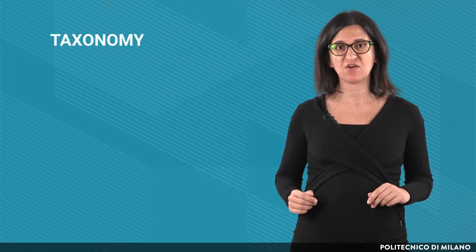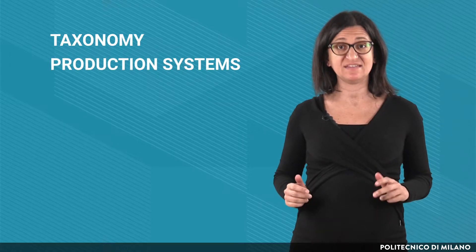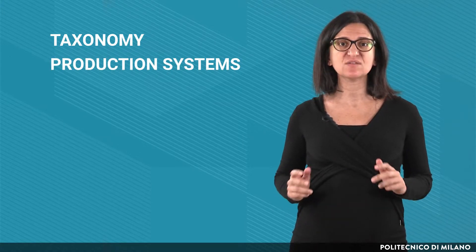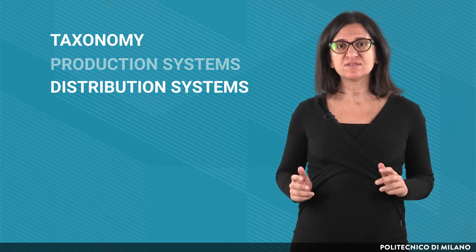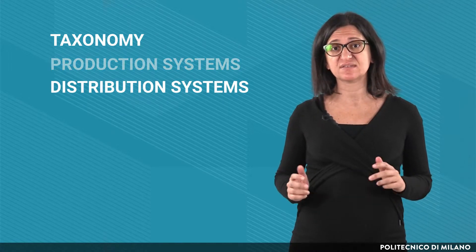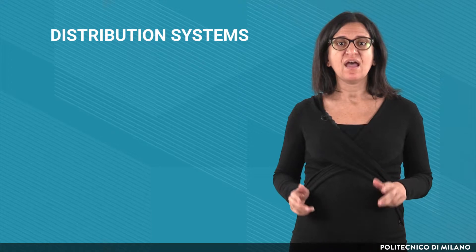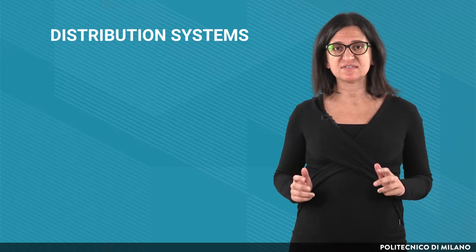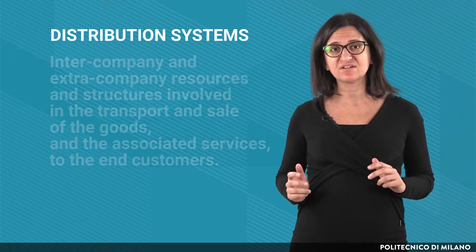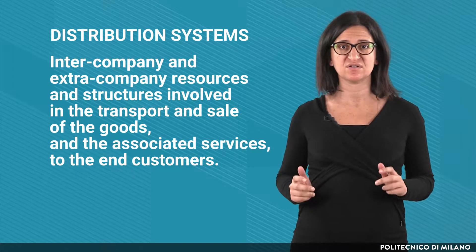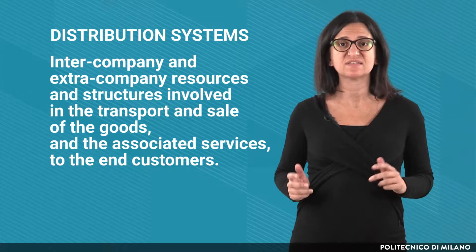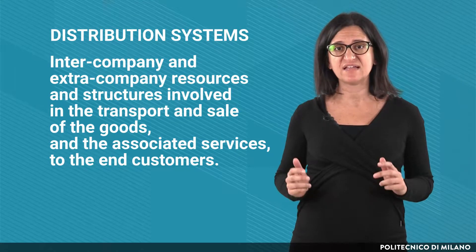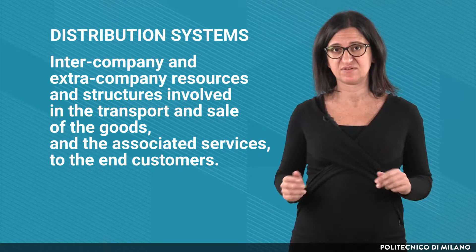In the previous lecture we have seen the taxonomy of production systems. In this lecture we will instead analyze the one of distribution systems. First of all, let's understand what a distribution system is. A distribution system is made by all the intercompany and extracompany resources and structures involved in the transport and sale of the goods and the associated services to the end customers.